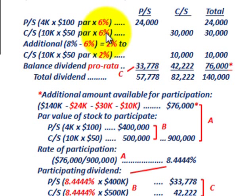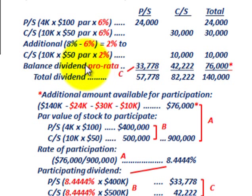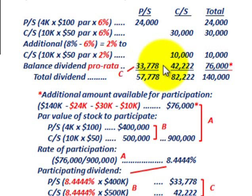The partially participating feature is where this additional 2% came into play for the common stock. The preferred stock got its dividend based on its 6% stated rate, and then the common stock got an additional 2% before the preferred participates. The remaining balance is then allocated on a pro-rata basis after calculating the total amounts based on dividend percentage rates.